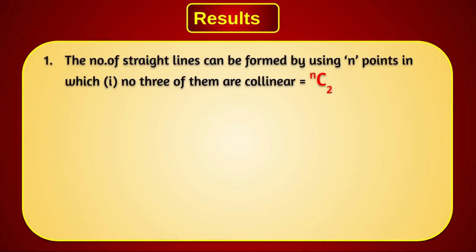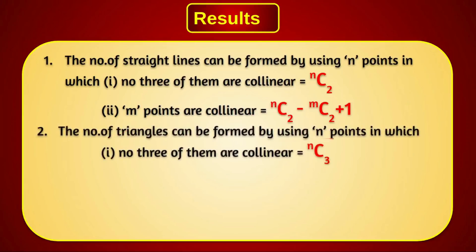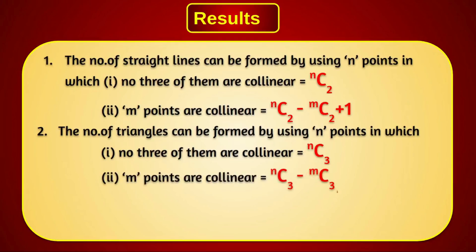Important geometric results: The number of straight lines formed using n points, where no 3 are collinear, is NC2. If m of those n points are collinear, the number of straight lines is NC2 − MC2 + 1. The number of triangles formed using n points where no 3 are collinear is NC3; if m points are collinear, it is NC3 − MC3.